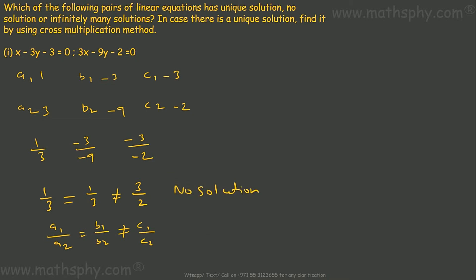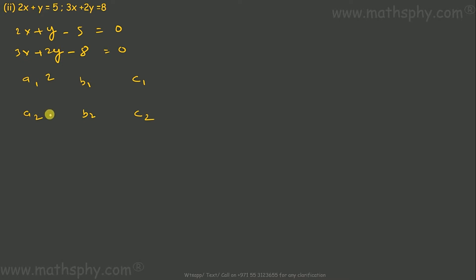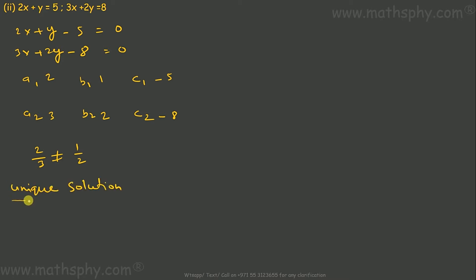Let's look into the next one. This is 2x + y − 5 = 0 and 3x + 2y − 8 = 0. A1 is 2, A2 is 3, B1 is 1, B2 is 2, C1 is negative 5, C2 is negative 8. So A1 over A2 is 2 over 3, B1 over B2 is 1 over 2 — which is not equal. So we don't need to look at C1/C2 because this gives intersecting lines, meaning a unique solution.